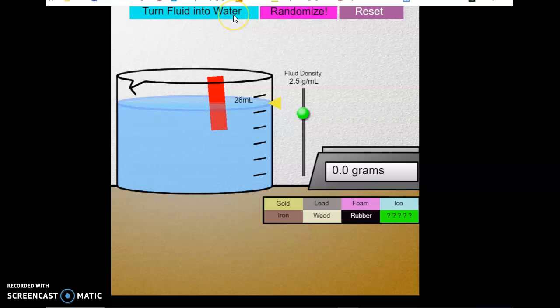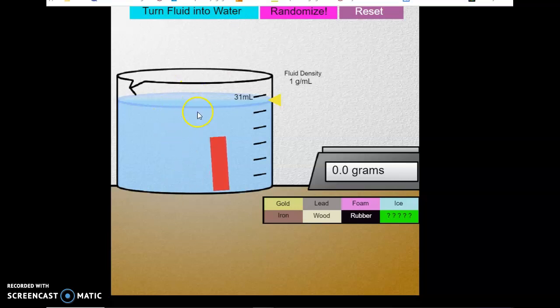First, I want you to click on this blue link which says turn fluid into liquid. Now you will see that this turned blue and there is the red block right here. There is an initial volume of 31 milliliters.